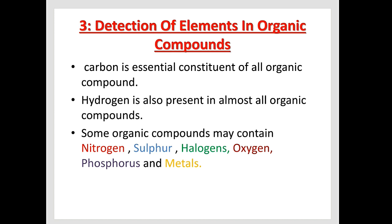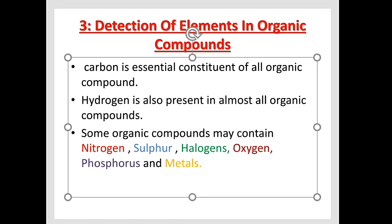As you know, organic compounds are compounds which contain hydrocarbons — both carbon and hydrogen. So first we are going to discuss the detection of carbon, detection of hydrogen, and after that we will discuss detection of other elements like nitrogen, sulfur, halogens, oxygen, phosphorus, and metals.